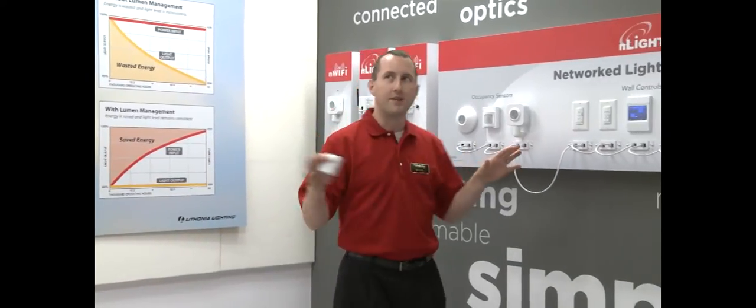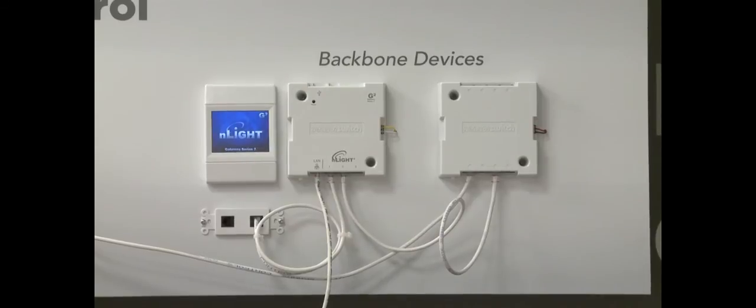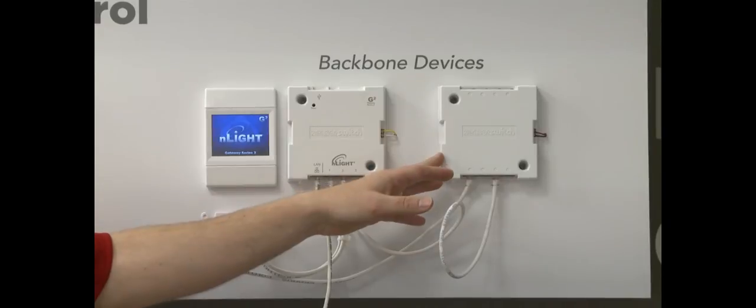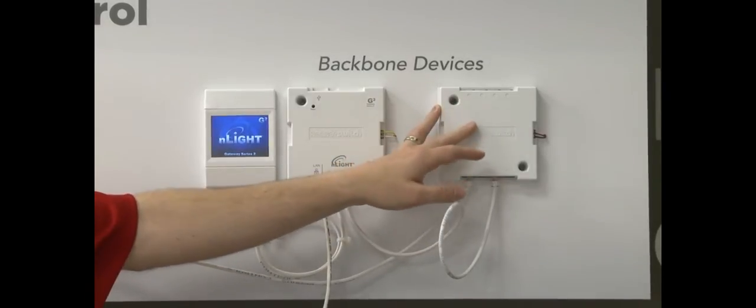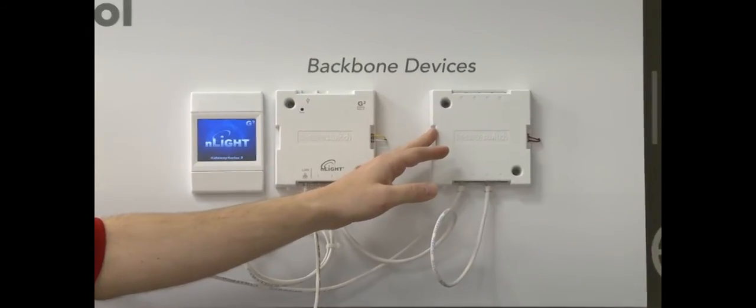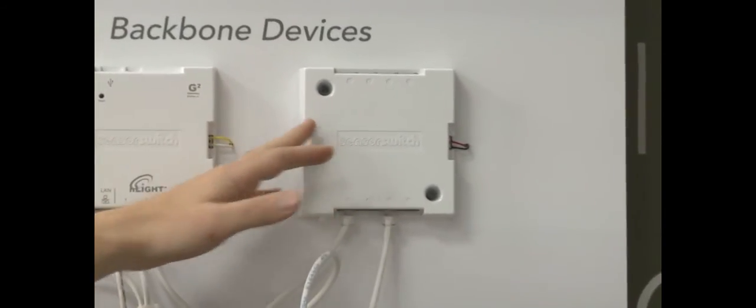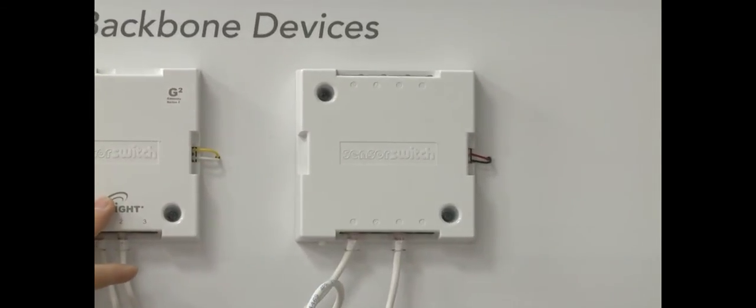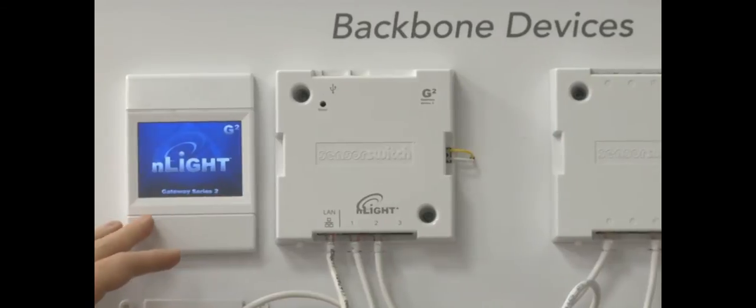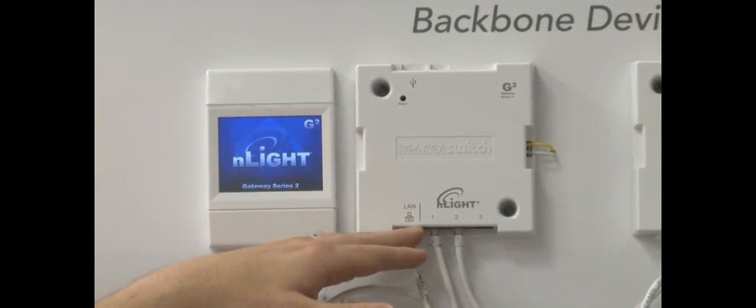This would be an example of one Nlight zone. Over the course of the building, you have many zones of devices. They all would get connected together in a backbone into devices we call bridges. You can have up to eight zones plugged into each bridge. As many bridges as would be necessary would then be connected up, eventually finding their way back to a device we call the gateway. The gateway has both the time clock as well as the interface to an Ethernet LAN.